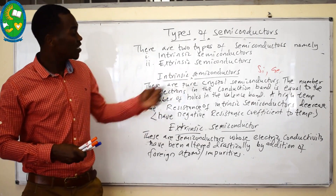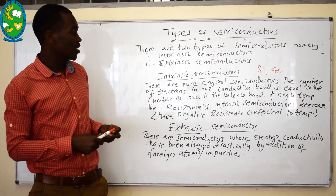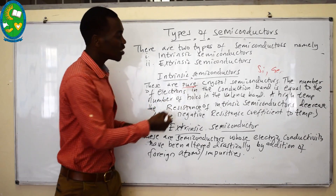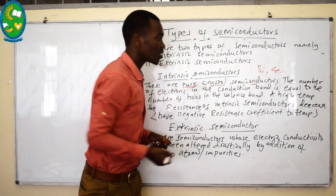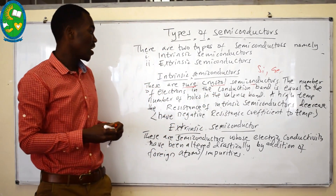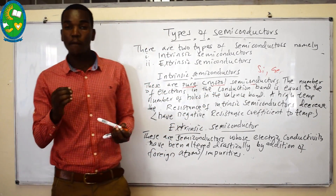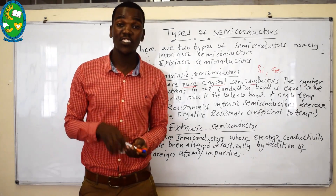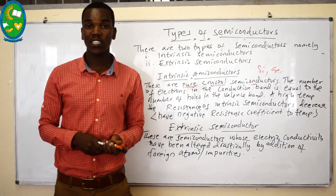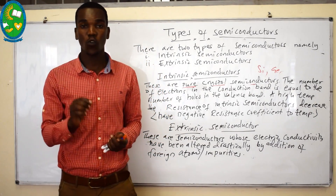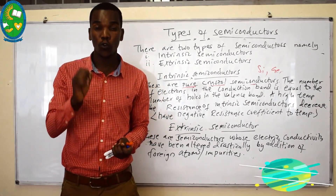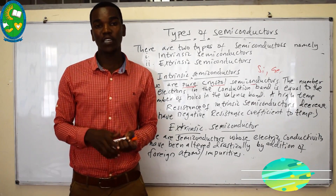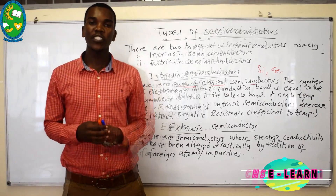So intrinsic semiconductors are the pure or pure crystal semiconductors. The number of electrons in the conduction band in intrinsic semiconductors is equal to the number of holes in the valence band.